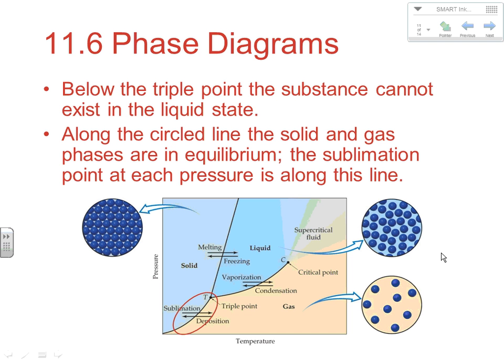Below the triple point of a substance, the substance cannot exist in the liquid state. That's why we have dry ice. Dry ice looks like ice but it's not H₂O — it's CO₂, and it's dry because it never becomes a liquid under normal pressure conditions. When you're below the triple point of a substance, you go straight from the solid to the gaseous state: it only sublimates. That's exactly what CO₂ does. You can have liquid CO₂, but you need higher pressure — when you raise the pressure above the triple point, CO₂ can exist as a liquid at certain temperatures and pressures.